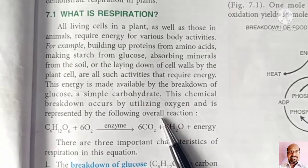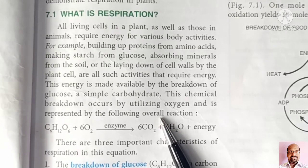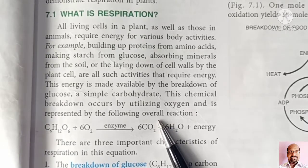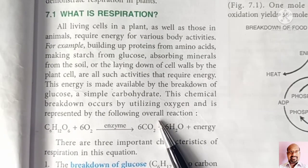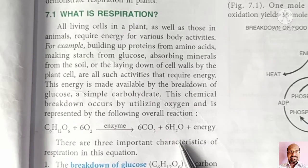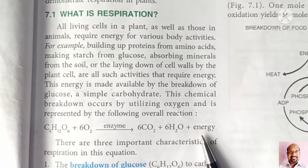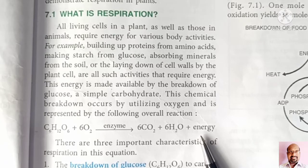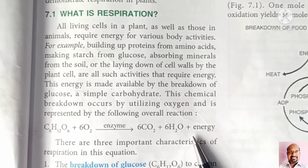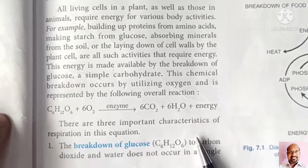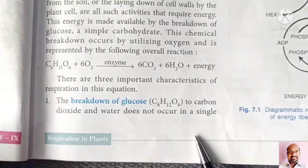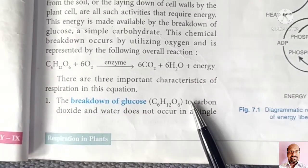Here, food is glucose. Oxidation of food — food is glucose — to liberate energy in the form of ATP, that is adenosine triphosphate. Respiration shows three important characteristics.